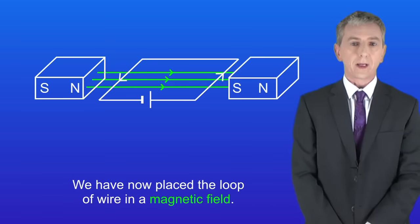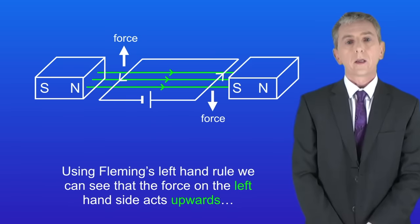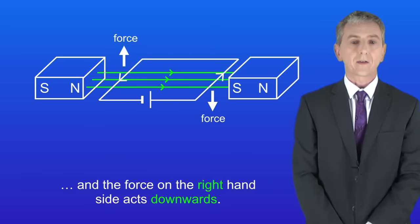We've now placed the loop of wire in a magnetic field. Now the wire experiences a force on both the left and right sides. Using Fleming's left hand rule we can see that the force on the left hand side acts upwards, and the force on the right hand side acts downwards.